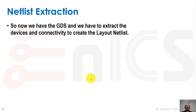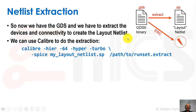Going back to our regular flow: now we have our GDS file that we streamed out from Innovus, and we want to extract it to create our layout netlist. We're going to use Calibre. Calibre is a tool from Mentor Graphics used for physical verification. One thing it can do is extract the connectivity and devices from the GDS file and create a SPICE netlist.